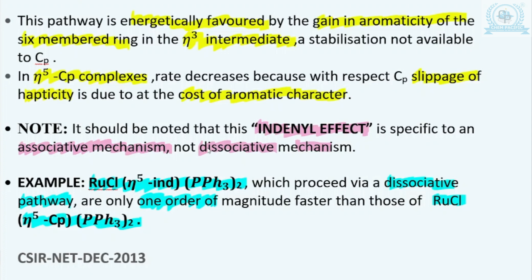When the intermediate transfers, slippage of the ring occurs from η5 to η3, and in that case the aromaticity of the benzene ring remains intact. Due to this aromaticity of the benzene ring, more stabilization is given to the intermediate. As a result, this stable intermediate leads to faster formation of the product, and the reaction becomes quite fast. This stabilization due to the aromatic benzene ring is not available in the CP ring, so stabilization of the intermediate is not possible in the CP ring.